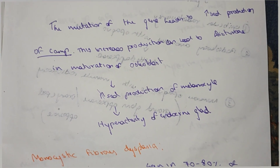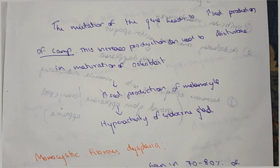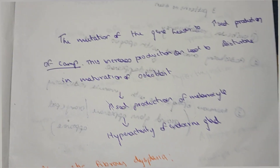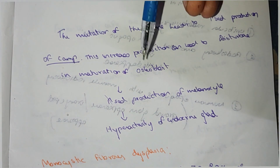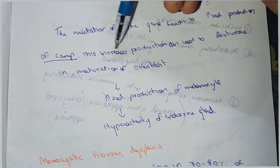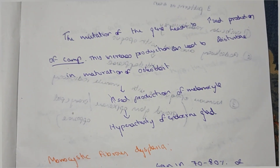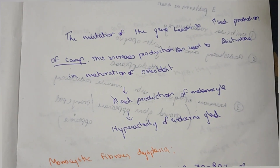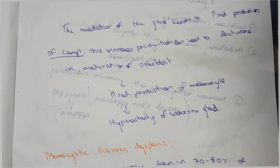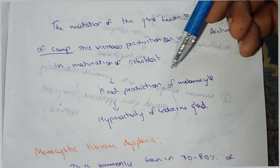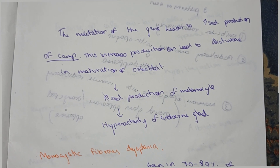Increased cyclic AMP can lead to disturbance in the maturation of osteoblasts — the bone forming cells. This also increases the production of melanocytes, which are pigment producing cells, and causes hyperactivity of the endocrine gland.